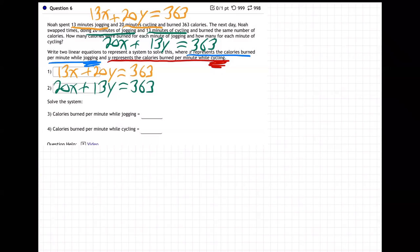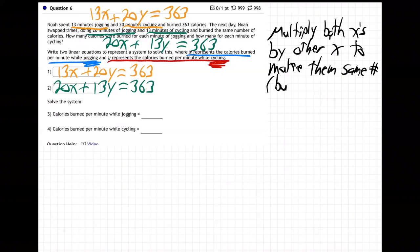What we're going to have to do is we're going to have to multiply both equations. This is a hard one. We're going to have to multiply both X's by the opposite X, or by the other X to make them the same number. But we're going to have to make one of them negative. So for example, I'm going to take this equation here and I'm going to multiply by negative 20.